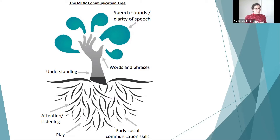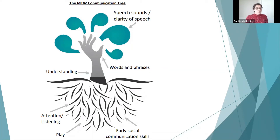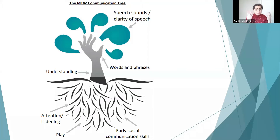We've then got play — there are lots of different factors: symbolic play, pretend play, parallel play, and turn-taking. Then we have attention and listening, which are those foundation skills you need before you can develop understanding of language and use of talking. We have to have that joint attention so children can hear the language around them and understand what's going on. You can't expect a child to understand language if they're not paying attention or listening.